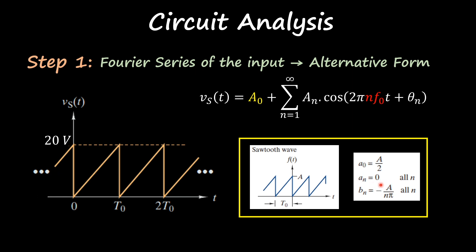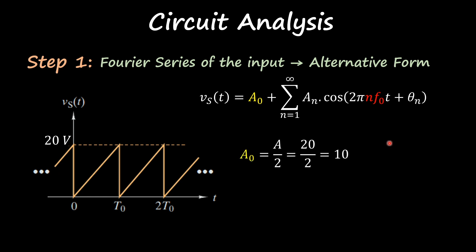Notice that we don't have any a_n, we only have b_n coefficients. In this case, we have a DC component that is related with your amplitude divided by two. So let's plug some values here and we get a DC component of 10 and a_n is equal to zero, and our b_n is minus 20 over n*pi.